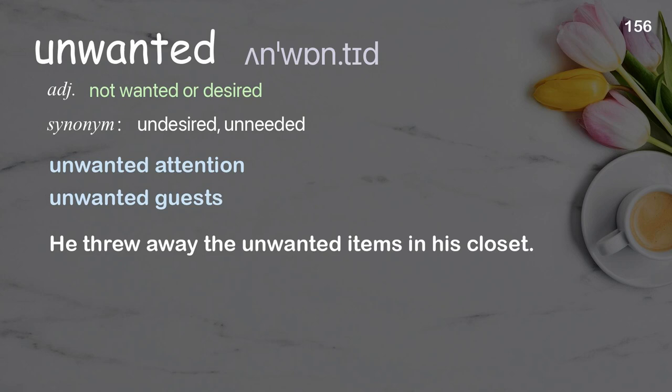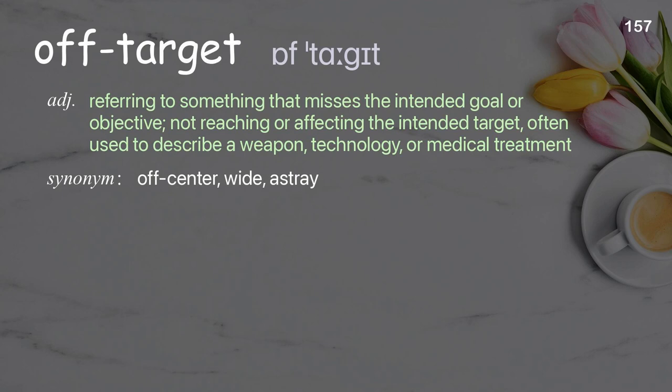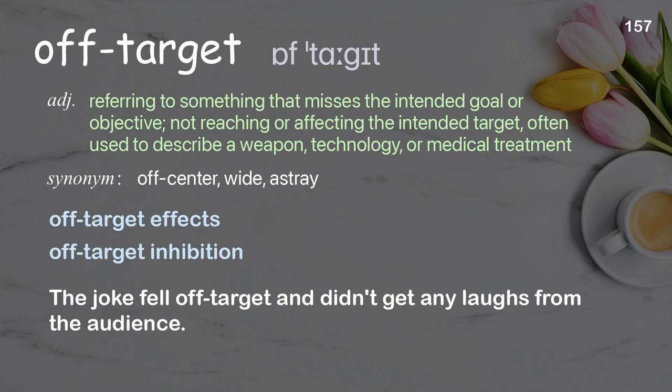Off-target: referring to something that misses the intended goal or objective; not reaching or affecting the intended target, often used to describe a weapon, technology, or medical treatment. Examples: off-target effects, off-target inhibition. The joke fell off target and didn't get any laughs from the audience.